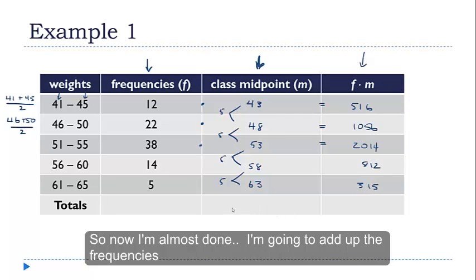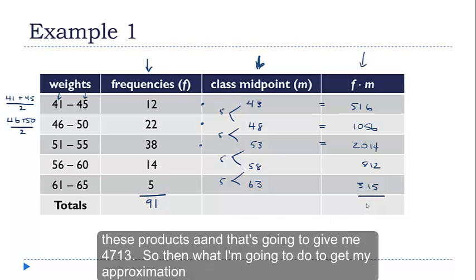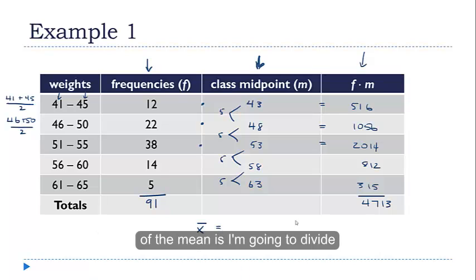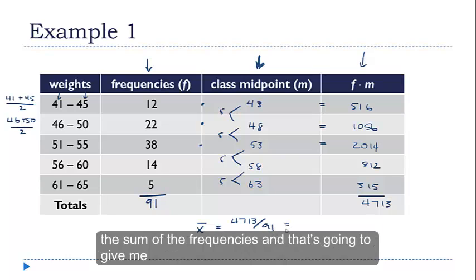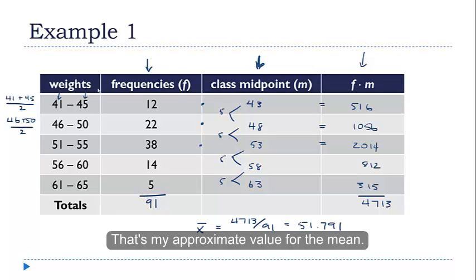Alright, so now I'm almost done. I'm going to add up the frequencies, and this is going to give me 91. And I'm going to add up these products, and that's going to give me 4713. So then what I'm going to do to get my approximation of the mean is I'm going to divide the number I got from the products by the sum of the frequencies, and that's going to give me 51.791. That's my approximate value for the mean.